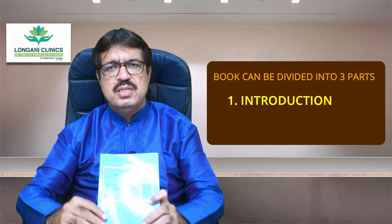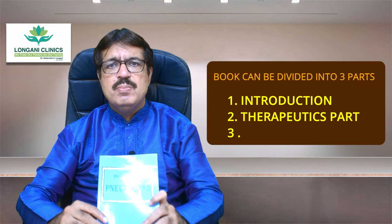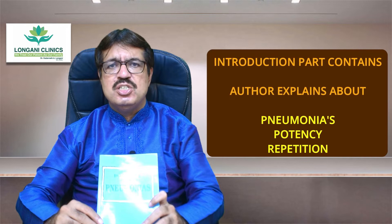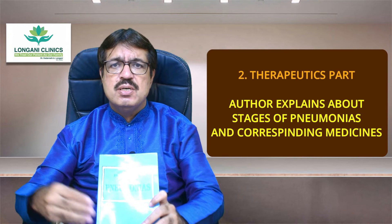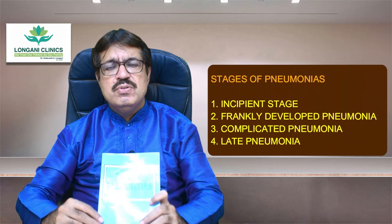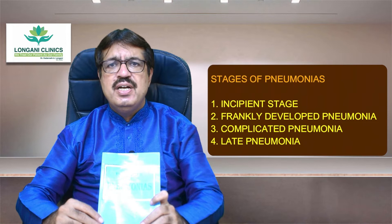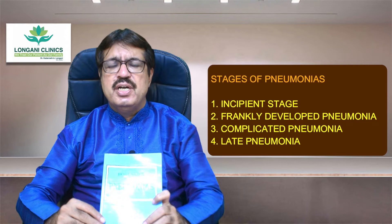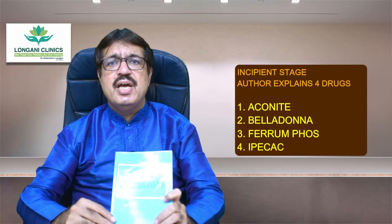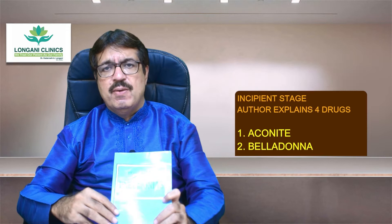This book can be divided into three parts. The first part is an introduction, the second part is a therapeutic part, and the third one is a short repertory. In the first part, the author explains about pneumonias, potencies, high potencies, low potencies and the repetition. In the second part, the author explains about the different stages of pneumonia and their corresponding remedies. There are four stages: incipient stage, frankly developed pneumonia, complicated pneumonia, and late pneumonia. In the incipient stage, drugs like aconite, belladona, ferrum phos, and ipecac are discussed.